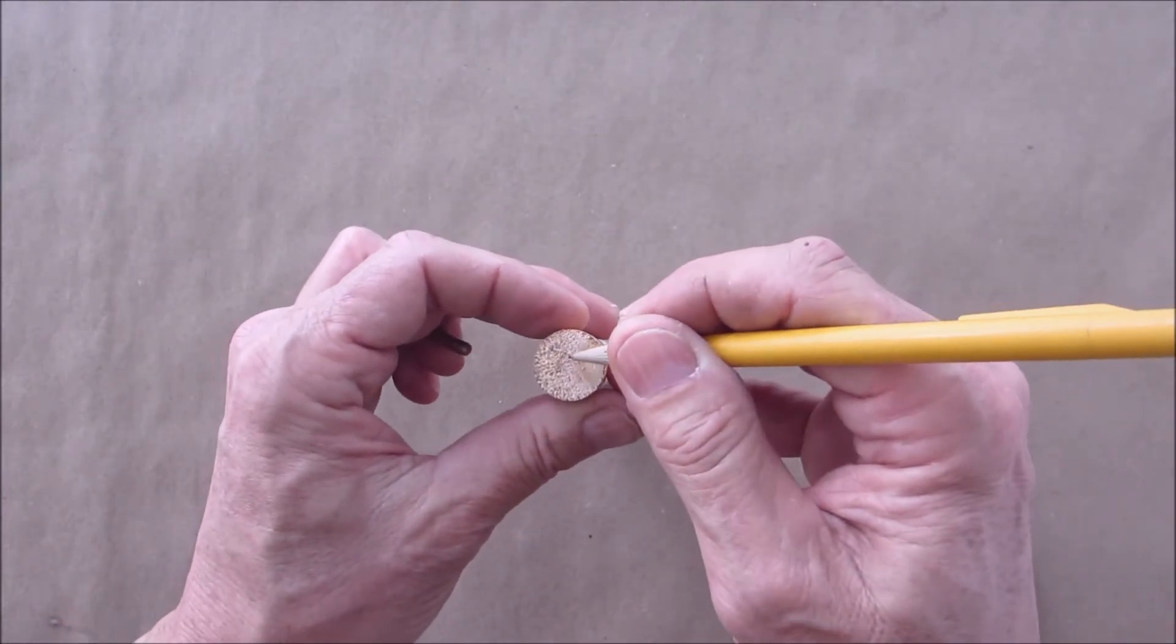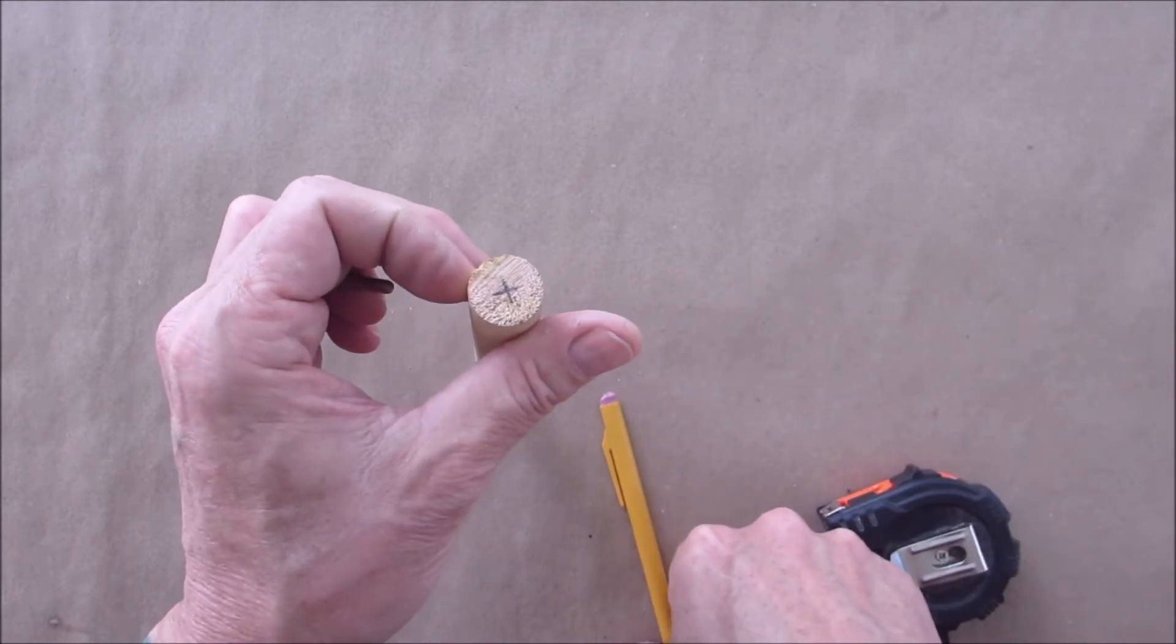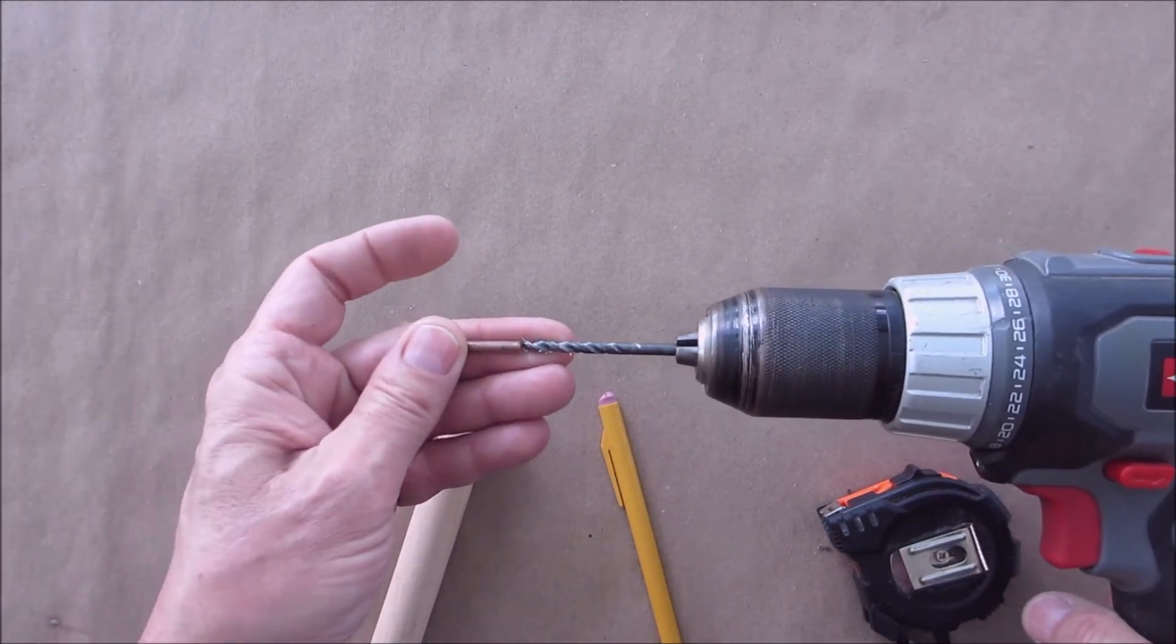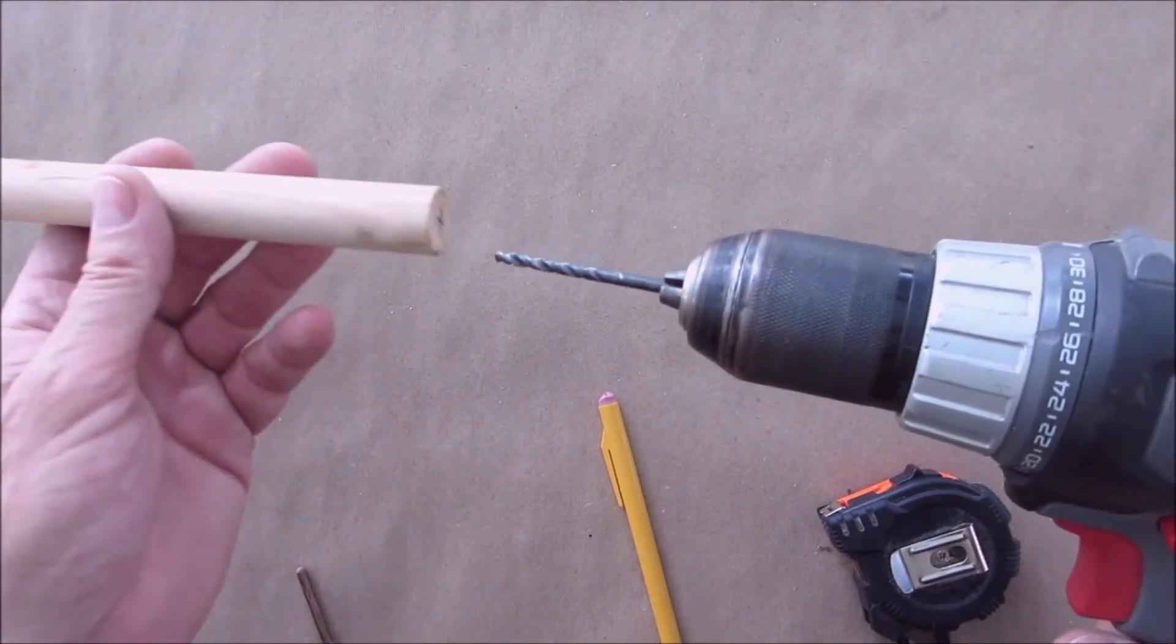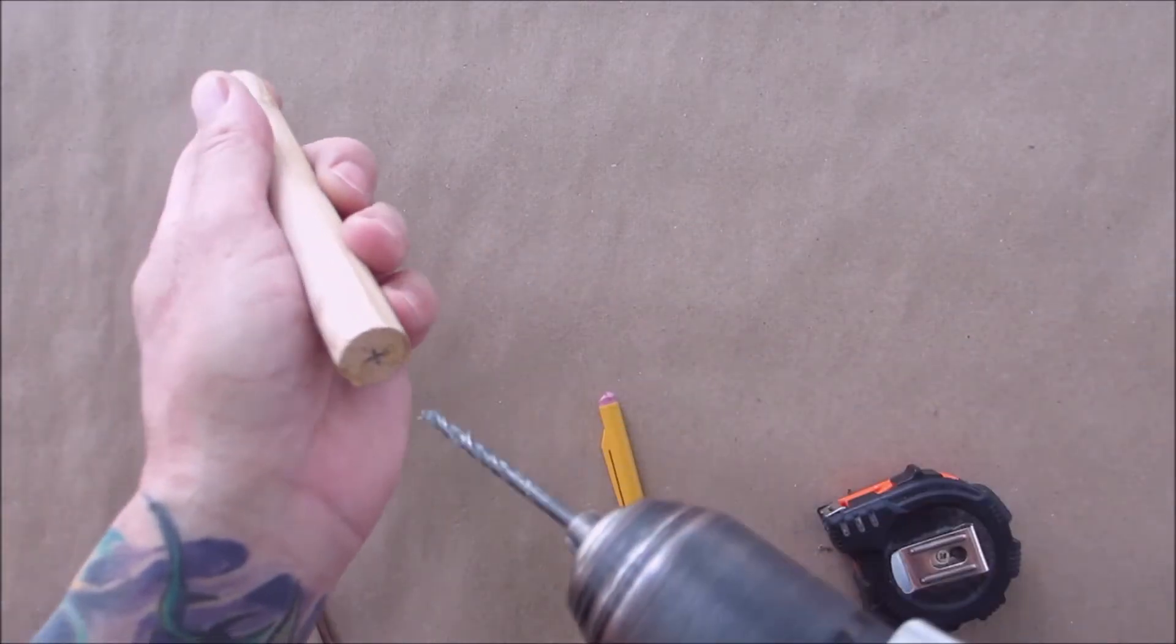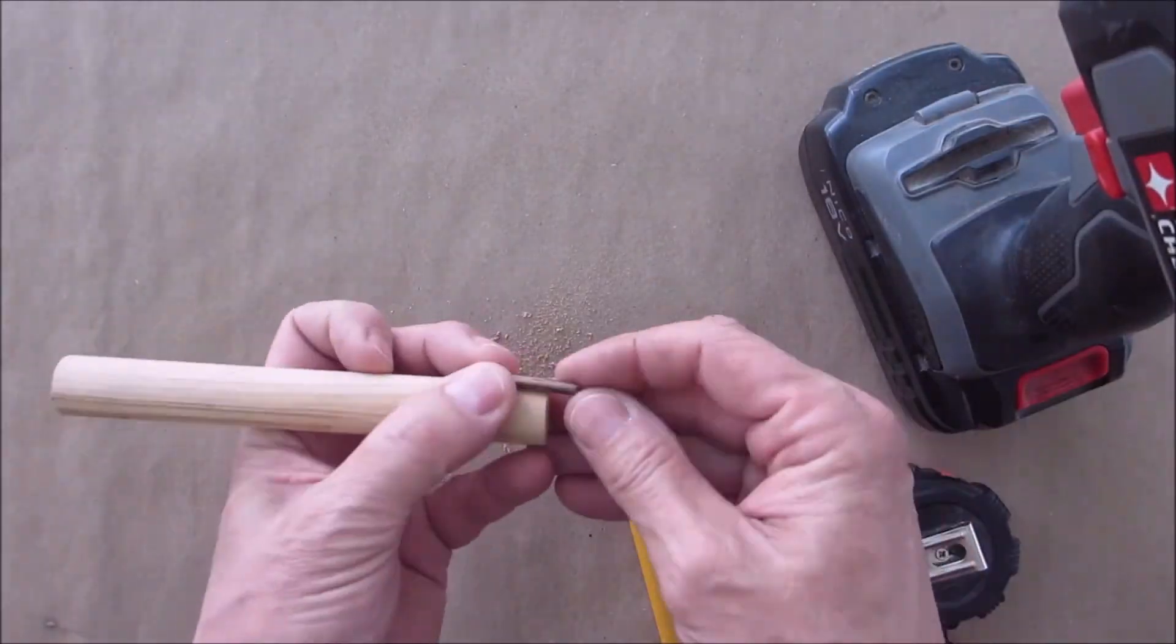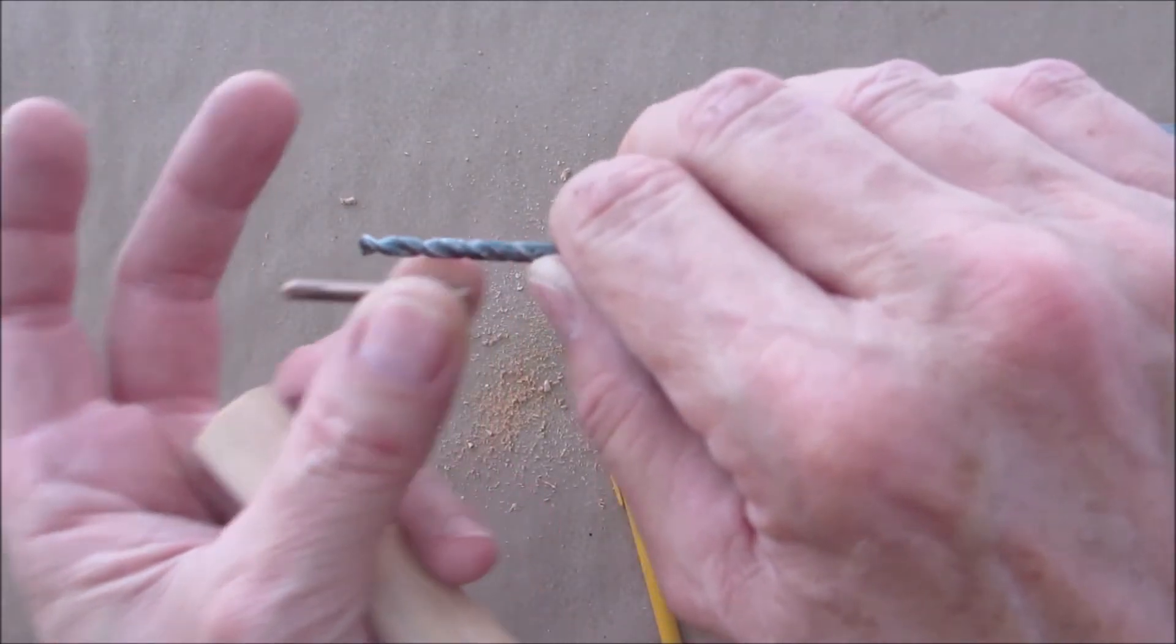You want to find the center of this. You can just eyeball it, it doesn't have to be exact. You're going to want to get a drill with a drill bit that's slightly smaller than this so there's a pressure fit when you push it in. If you're not comfortable holding something like this and drilling it, by all means put it in a vise, but I have no problem doing this. Put a little hole in here, go slow to start. That's just about a quarter of an inch.